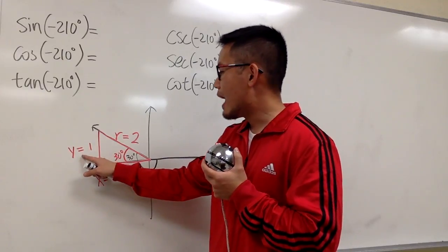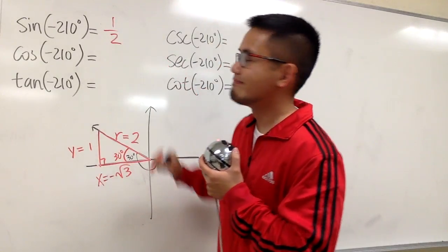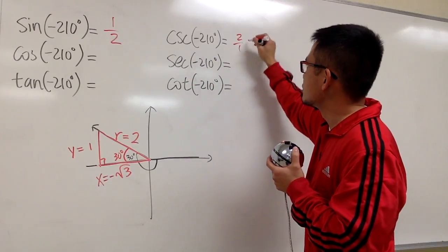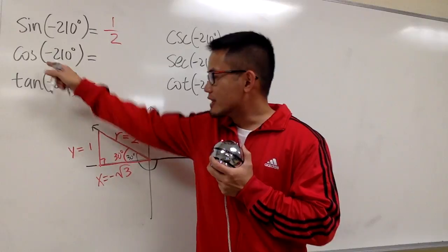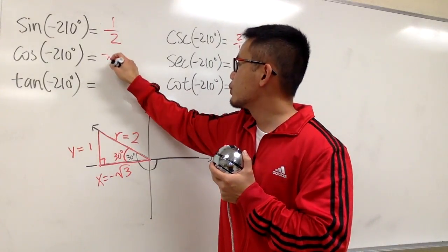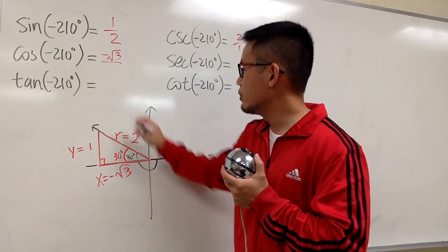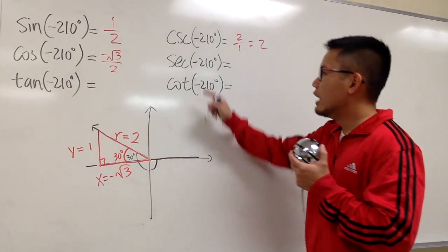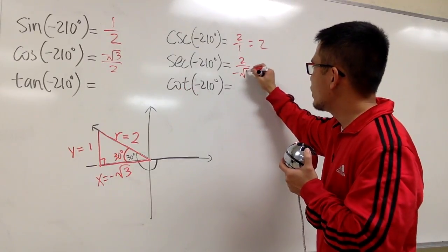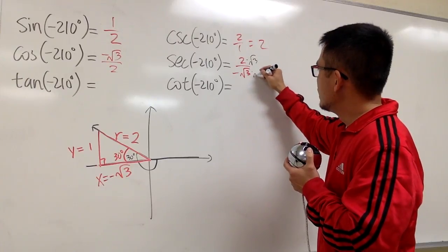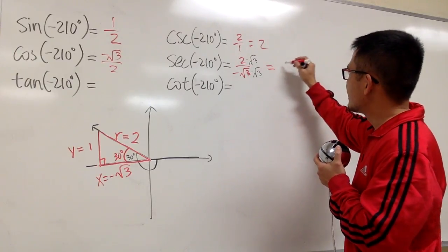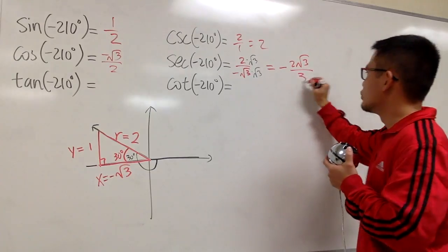For sine, it's going to be y over r, so we have 1 over 2. And then for cosecant, it's just going to be 2 over 1, which is just 2. For cosine, it will be x over r, so in this case it's negative square root of 3 over 2. And for secant, it's just going to be the reciprocal of that, which is 2 over negative square root of 3. Let's go ahead and rationalize the denominator — we will have negative 2 square root of 3 over 3.